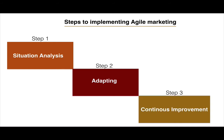Step three is continuous improvement. After you have created a framework that works for your team and decided what works best, you need to have a culture of always continuously improving — looking at what is working, and looking at other frameworks and practices you can integrate into your marketing team. Agile is a journey, not a sprint. It's something that you must continuously evolve and add new things.